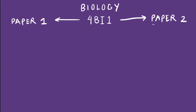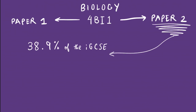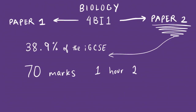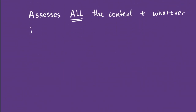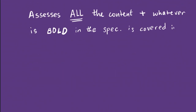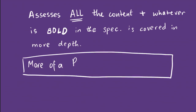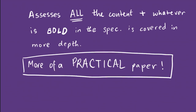The specification is also linked down below. Coming to paper 2: it constitutes 38.9% of the IGCSE, is for 70 marks, and is 1 hour and 25 minutes long. It assesses all the content from the specification, and whatever is bold in the specification is covered in more depth. It's more of a practical paper.